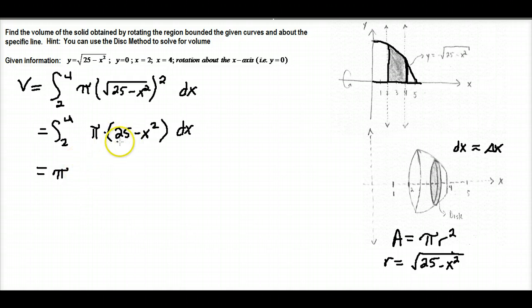And if we do the integral of 25, we know that that is a constant, so when we end up doing that, that's just going to give us 25x minus, if we do the integral of x squared, we know that we have to add one to the exponent and then divide by that same value. So we end up getting one-third x cubed, and all of that is being evaluated in between 2 and 4.